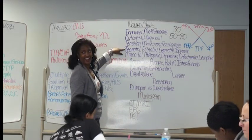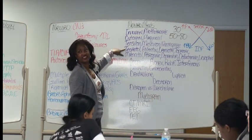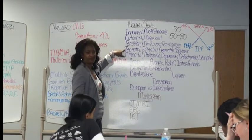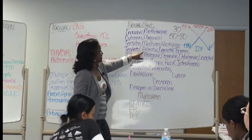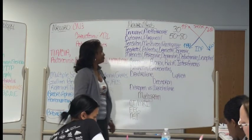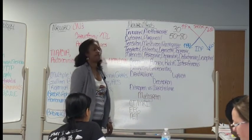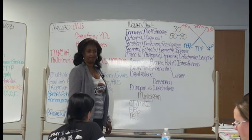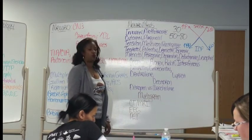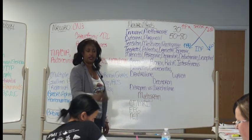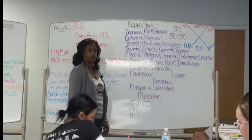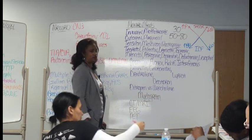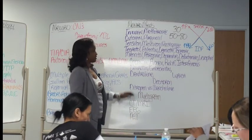Now write down every one of these seizure drugs: Tegretol, Dilantin, Lamictal, Topamax, and add Depakote after Topamax. Topamax is also used for migraines. Depakote is also used for migraines. Meningitis is seizure precautions — I'm sure you know that, but don't forget it. That's why seizures follow right after meningitis.